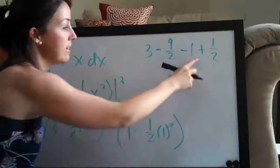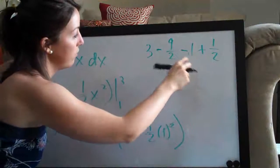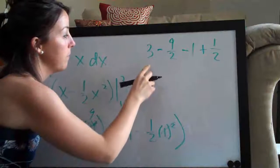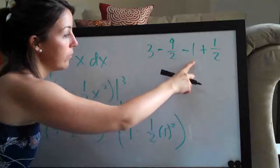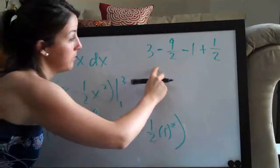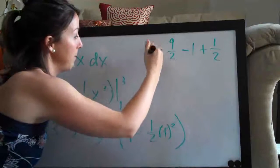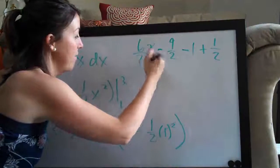And now what we need to do is simplify this. So I'm actually going to go ahead and put the 3 and the 1 over 2 so that we have a common denominator. The denominators for each of these are 2, so I'm going to change this to 6 halves.